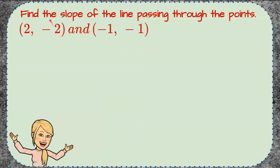Here's your challenge. Find the slope of the line passing through the point 2, negative 2, and negative 1, negative 1.